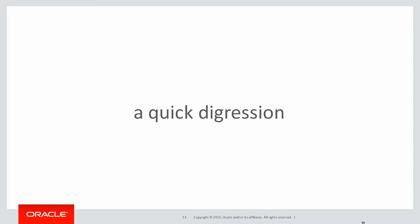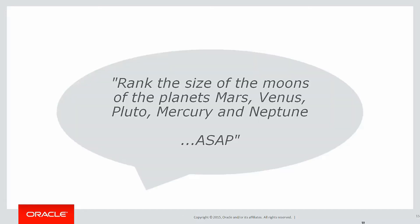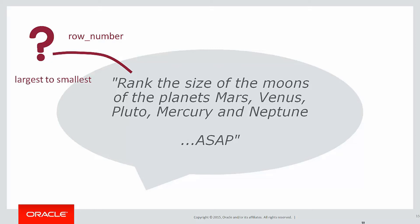A quick digression: when it comes to analytics and you start being given these questions, precision is incredibly important. Perhaps the first thing you'll be doing is going back to the person that asked the question and trying to get a more accurate definition. When they say 'rank', do they really mean ROW_NUMBER, or RANK, or DENSE_RANK? Is it smallest to largest or largest to smallest? We'll assume ROW_NUMBER and largest to smallest. When they say 'size', do they mean weight or radius? We're going to assume radius — but this is an example of where you need to occasionally go back to the user to get more precision in the definition.